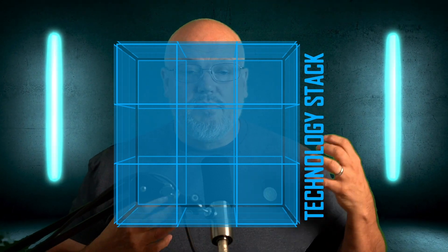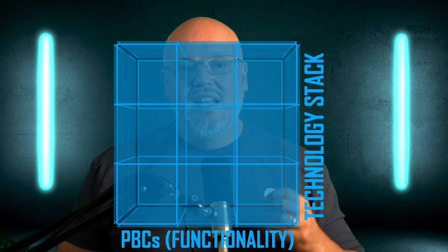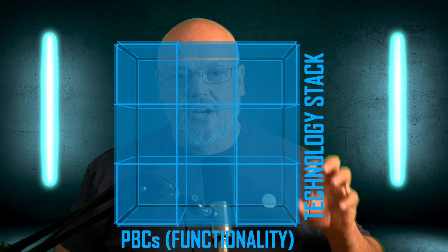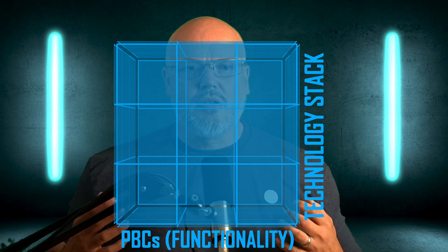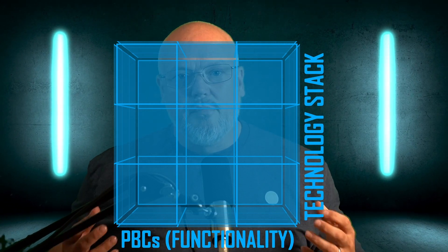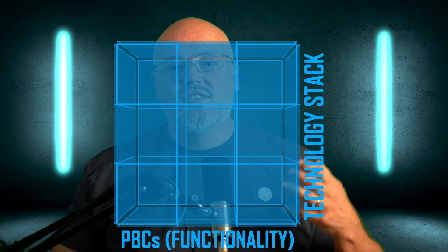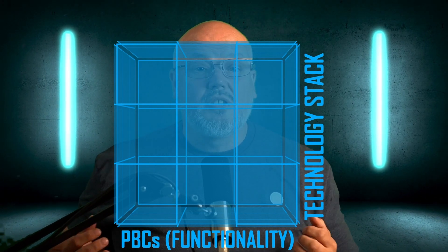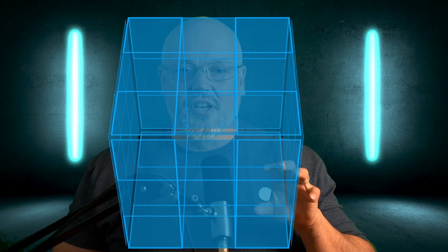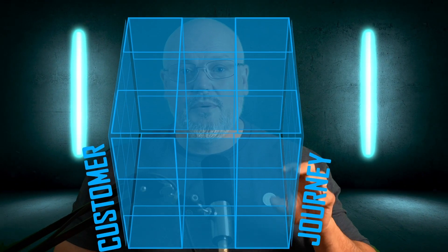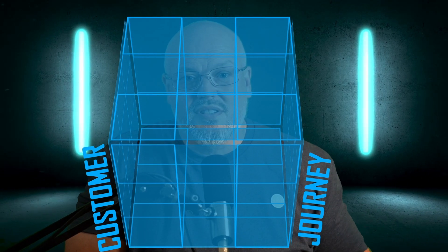The cube has three dimensions. The first is the technology stack — how are the technical components brought together? This could be MACH architecture, it could be headless, or even a monolith wrapped up in APIs. The second dimension is packaged business components, where value is wrapped up in packaged features. These can be large components like the Ampliance CMS, or a small component like a basket, or even a checkout process from Bold Commerce. The final dimension, which often gets neglected, is the customer journey — where the value of the packaged business components actually gets delivered.